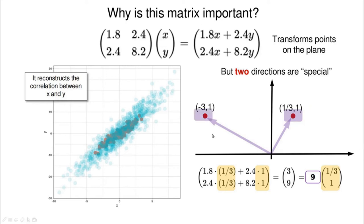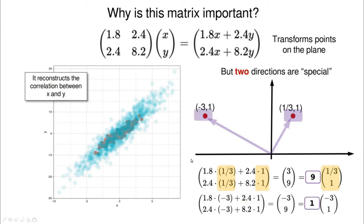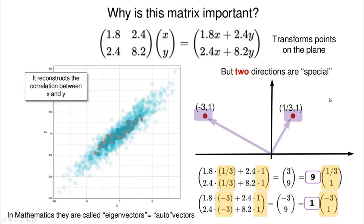Let's try the other vector (−3, 1). We multiply and end up with the same vector — 1 times the original vector. We started with (−3, 1) and end up with (−3, 1). These two vectors are special vectors called eigenvectors. The word 'eigen' means 'auto' because these are the only two vectors in two dimensions in which there is no rotation — we are just scaling them. These scaling coefficients are called eigenvalues.